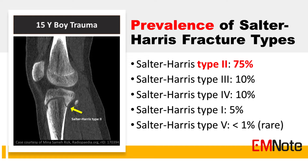The prevalence of Salter-Harris fracture types is as follows: type 2 at 75%, type 3 at 10%, type 4 at 10%, type 1 at 5%, and type 5 at less than 1%.